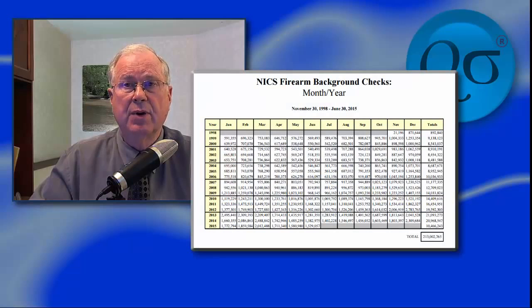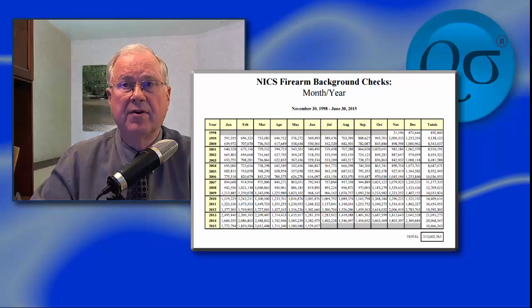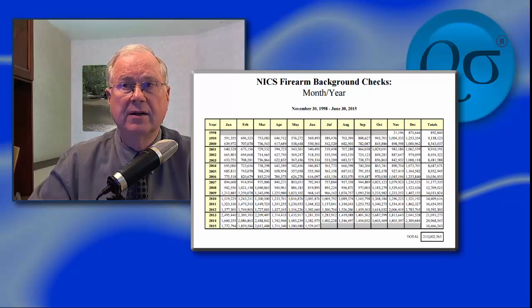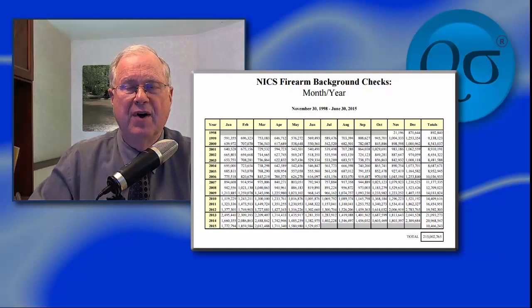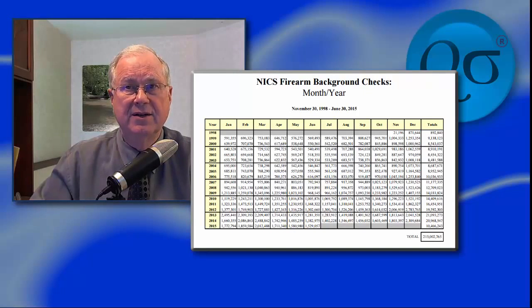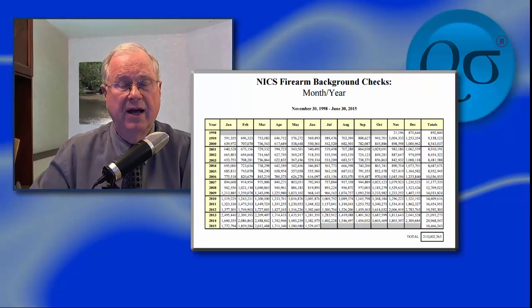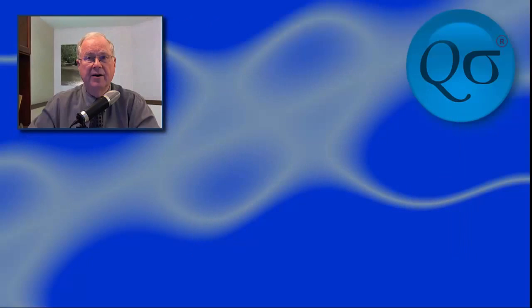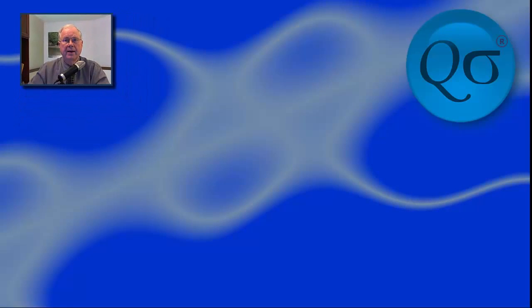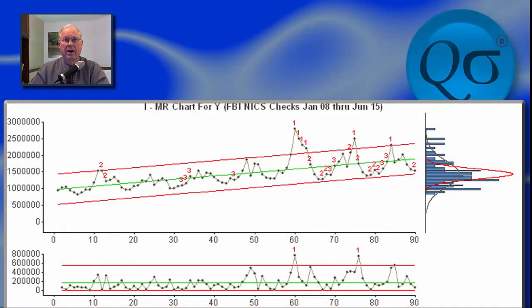The U.S. Federal Bureau of Investigation posts its monthly count of the number of buyer background checks on its web page. Practically all personal purchases of new firearms require this check. While it doesn't perfectly match the number of new firearms sold, it is highly correlated and a very good coincident indicator.